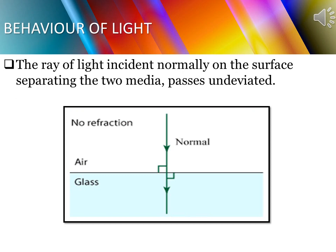What happens when the ray of light is normal to the surface of the two media — that is, perpendicular to the surface separating them, or when the angle of incidence is 0? When a ray is normal to the surface, or the angle of incidence is 0, the incident light on the surface separating the two media passes undeviated.